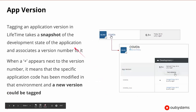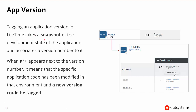To do this, we will be tagging an application version in Lifetime. This is basically like taking a snapshot of the application at a current time and associating a new version number with it. When we see this inside of Lifetime, looking at the details of our application, we'll be able to see an app version number.